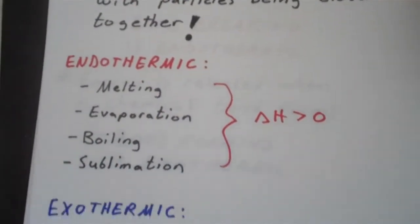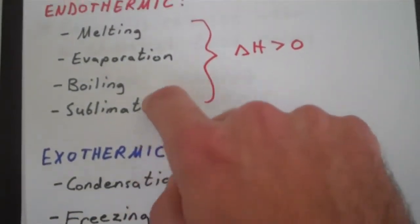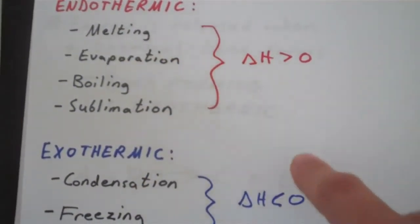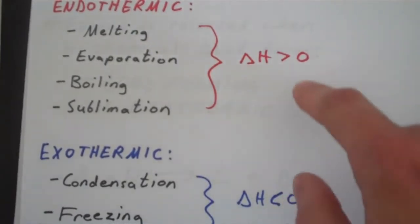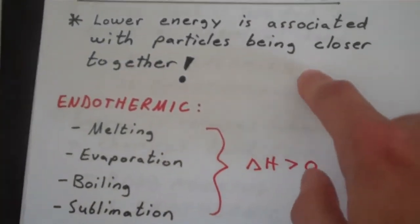As long as you know that, and you know what all of these processes are, you don't really need to memorize whether the delta H is going to be positive or negative. You can just sort of infer it.